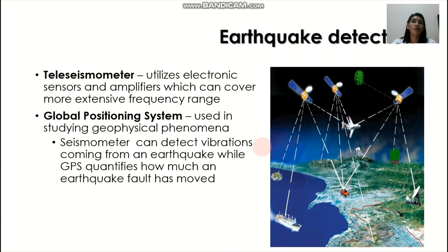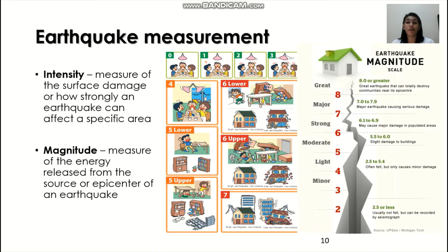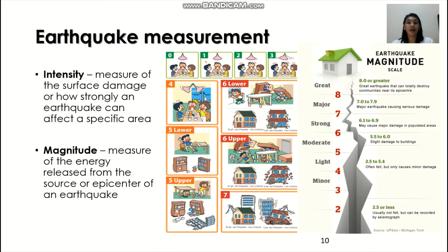Following earthquake news: initially, a few minutes after the initial shaking, there is already an initial report; then after a few hours, a comprehensive report comes out with the help of GPS. So how do we measure earthquakes? We use two terms: intensity and magnitude. Intensity simply refers to the measure of surface damage. Intensity zero means no earthquake; intensity one is slight damage; intensity two shows slight shaking of chandeliers; and intensity three is already visible.